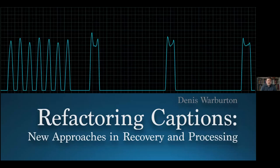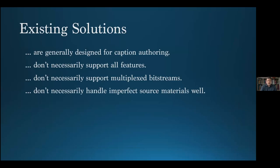Three years ago, we began research work on the technical history of closed captioning. It was clear that there was a need for a flexible, open, and accessible means of working with raw caption data from vintage sources. Existing solutions are generally designed for caption authoring, which don't necessarily support all of the features or the multiplexed bit streams that were in use when these systems were first deployed. These failings are further compounded by problematic support for imperfect source materials, which are anything but rare in the analog domain.